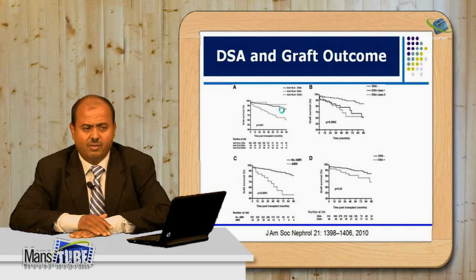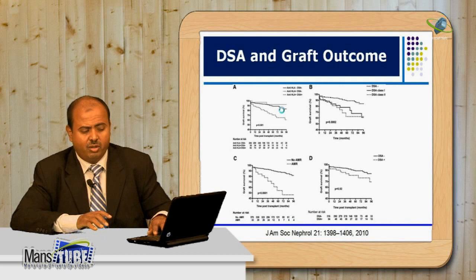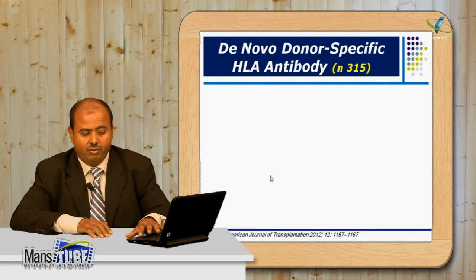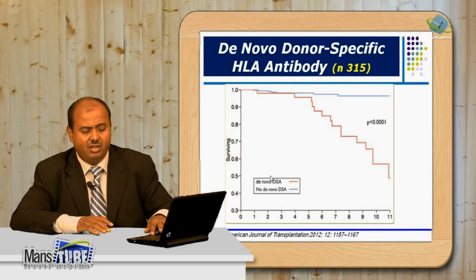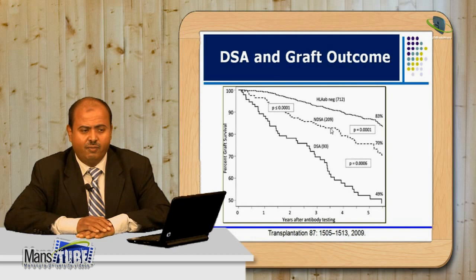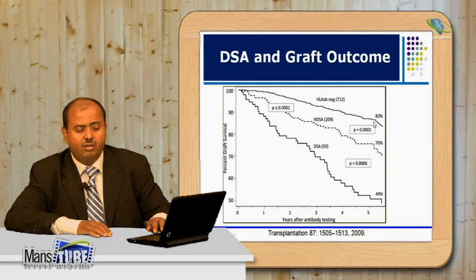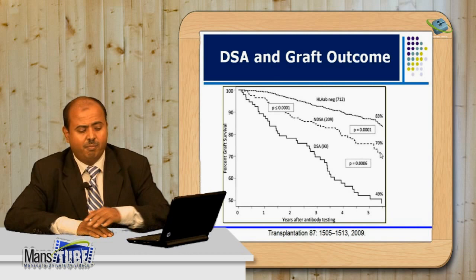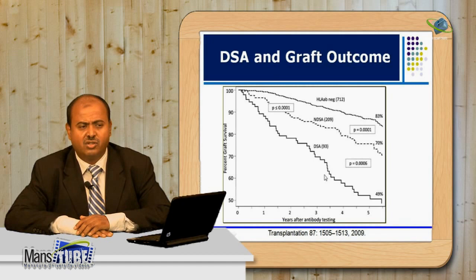If there is DSA against HLA class I or class II, or if the patient develops acute AMR, graft survival is drastically affected. Regarding de novo anti-HLA DSA after transplantation: if DSA develops post-transplant, outcome is poor. Studies show that without anti-HLA antibody, five-year graft survival is 83%; with non-donor-specific anti-HLA antibody it is 70%; but with donor-specific antibody, more than 50% of grafts are lost within five years.